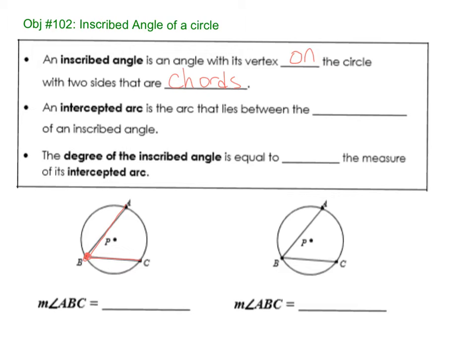An intercepted arc is the arc that lies between the chords of an inscribed angle. So this is your intercepted arc. The degree of the inscribed angle is equal to half the measure. So this is the key here.